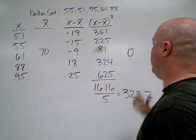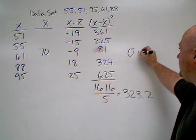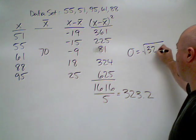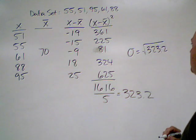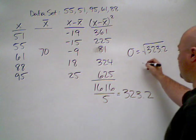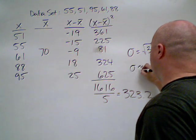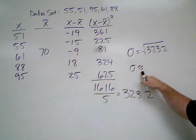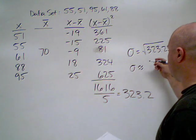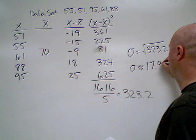Our standard deviation, which is represented by sigma, is the square root of this number. So, it's the square root of 323.2. And we're going to get approximately, you see this notation, that means it's approximate, it's not exact.